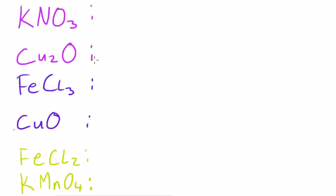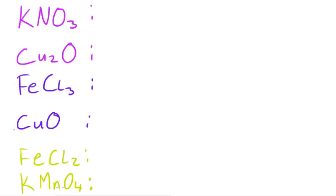In this video I have a series of formulas of compounds which contain elements with variable oxidation numbers. Looking at these, we have nitrogen which is variable, copper variable, iron variable, copper variable, iron which is variable, and this one has manganese which is variable.